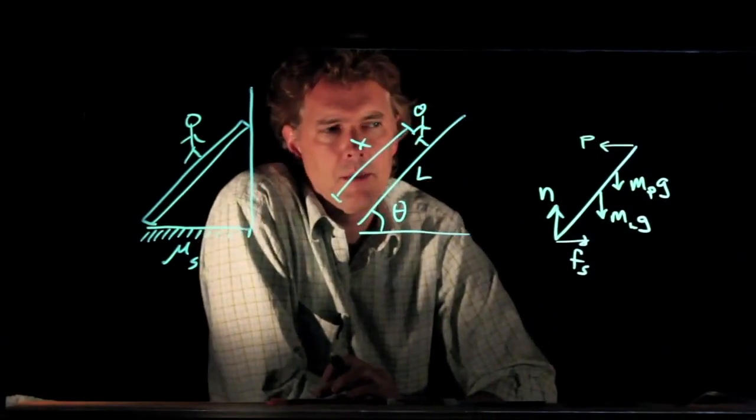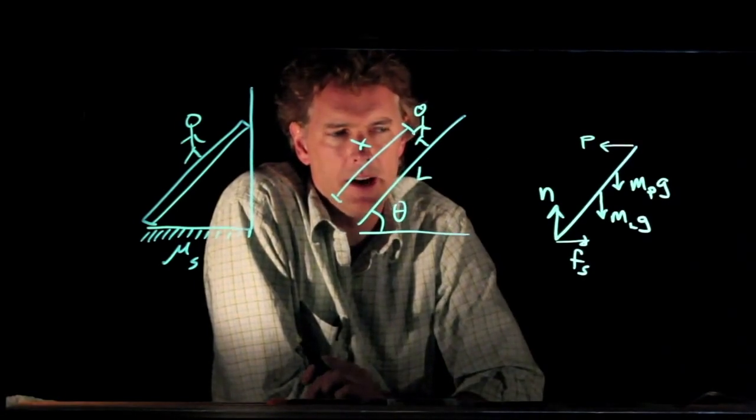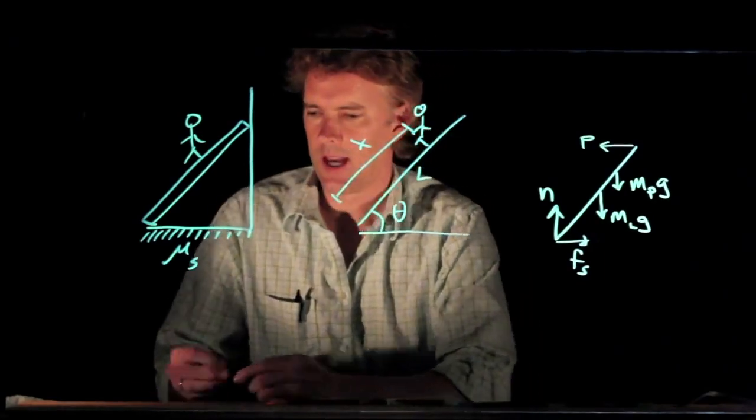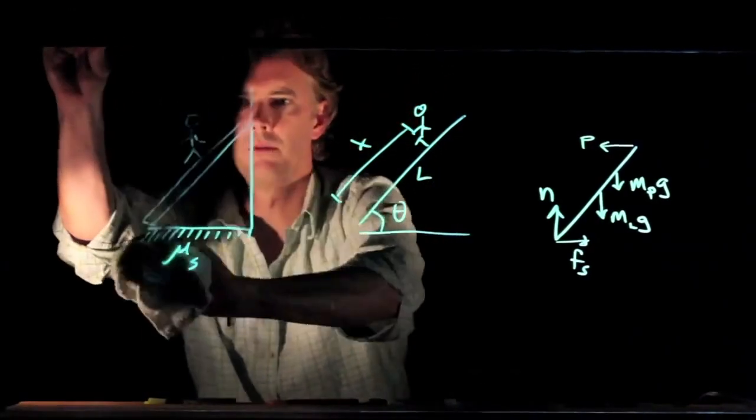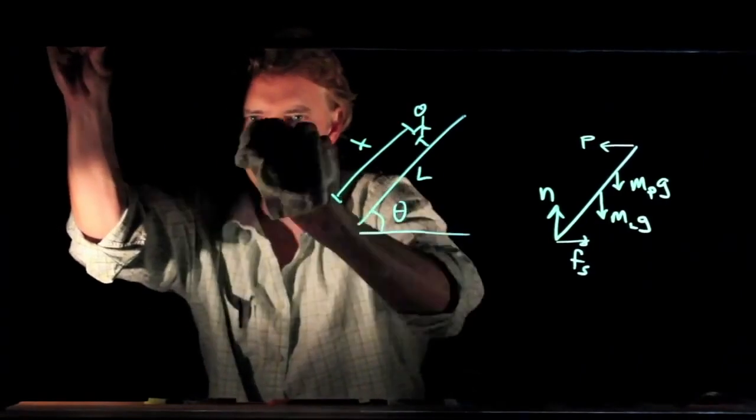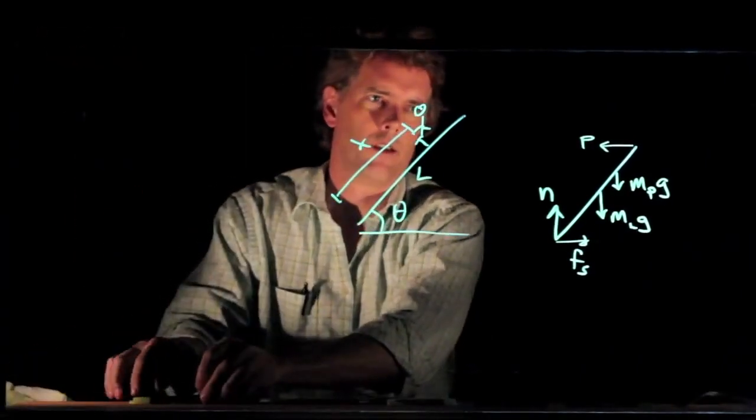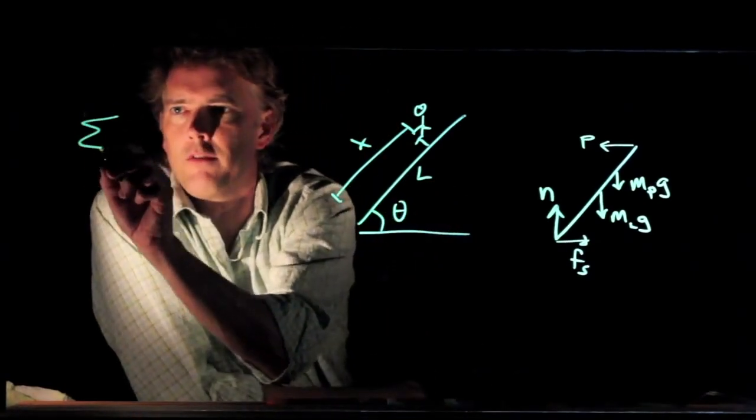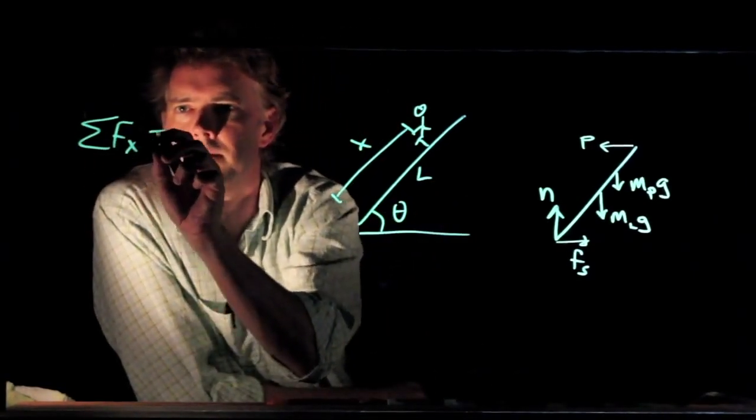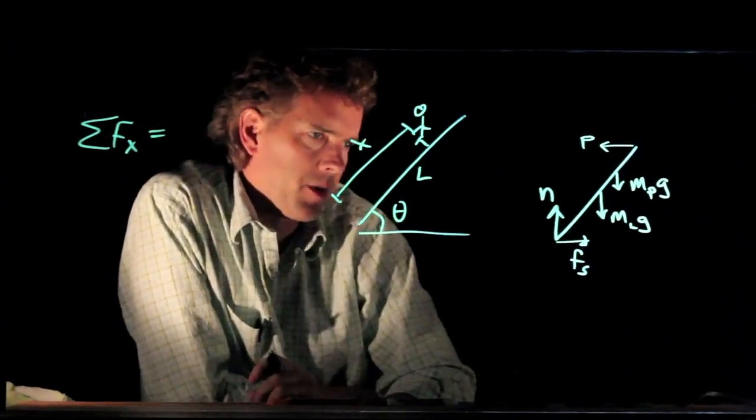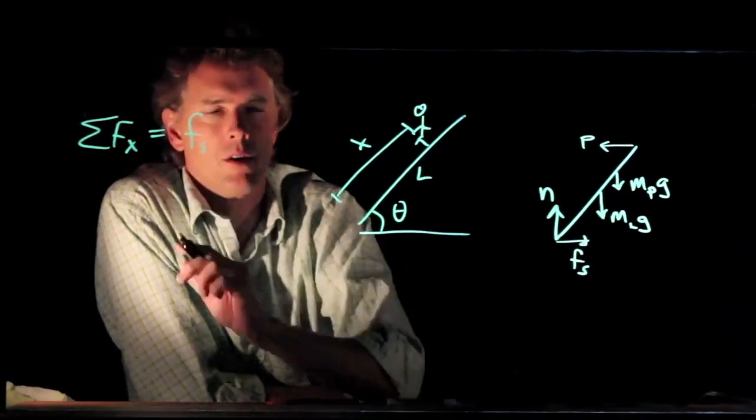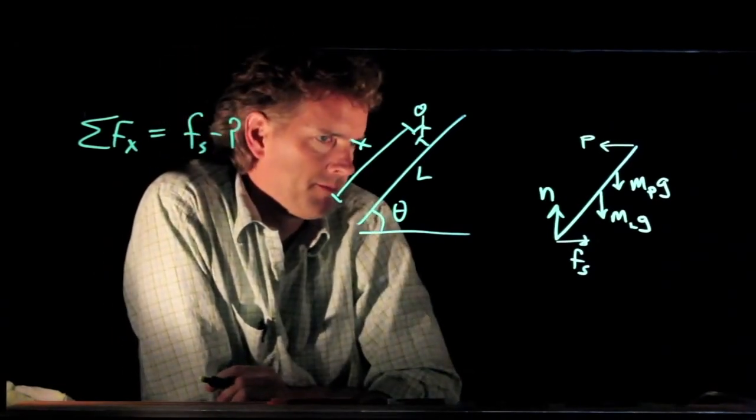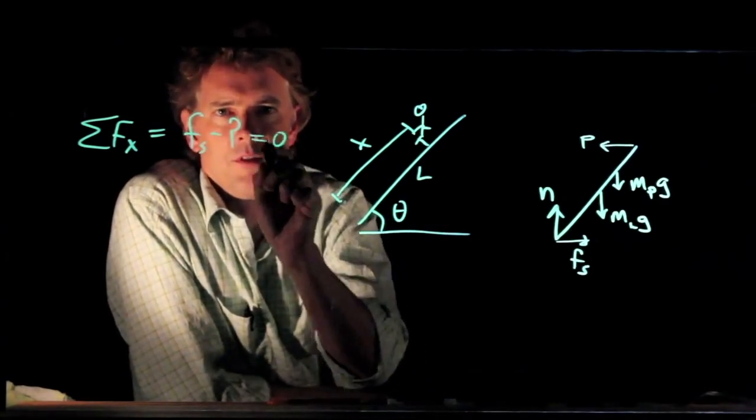And now let's think about the forces that are acting on the ladder and also the torques that are acting on the ladder. We have the sum of the forces in the x direction. What are the forces in the x direction? Well, F sub s is going to the right. P is going to the left. That's it. Those have to add up to zero.